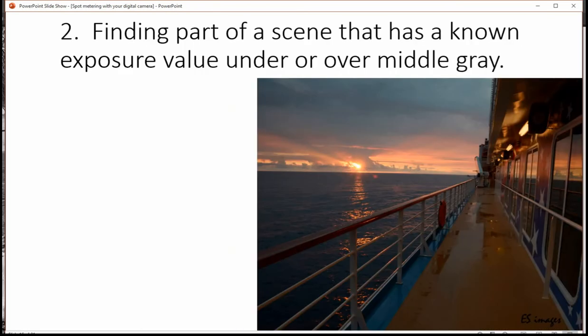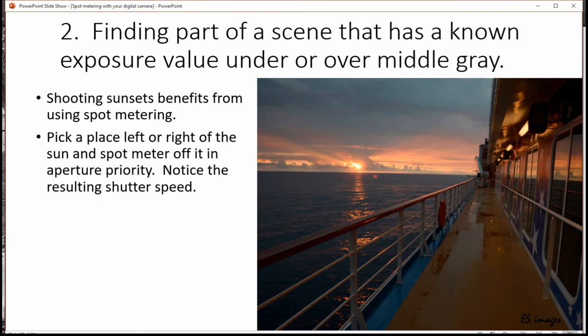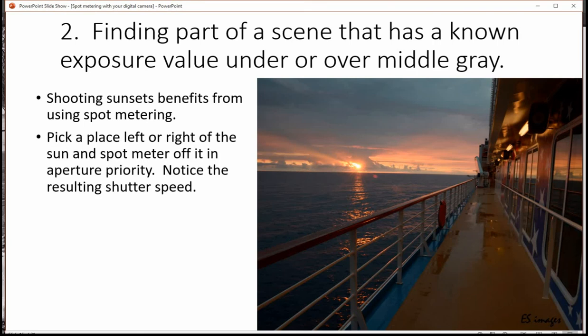The second way of doing this is if you have a known exposure value of some point in the picture. A good example of that for me is shooting sunsets. This is something I do all the time. I pick a place left or right of the sun and spot meter off it in aperture priority. If you notice on the picture I've got a little circle there showing where you would meter off of. You would pay attention to the resulting shutter speed.